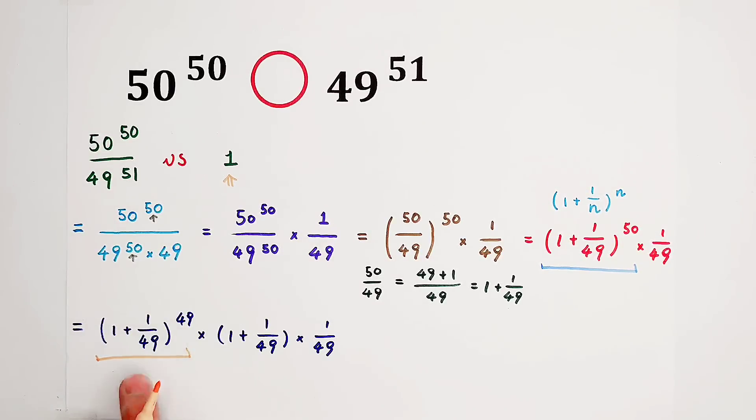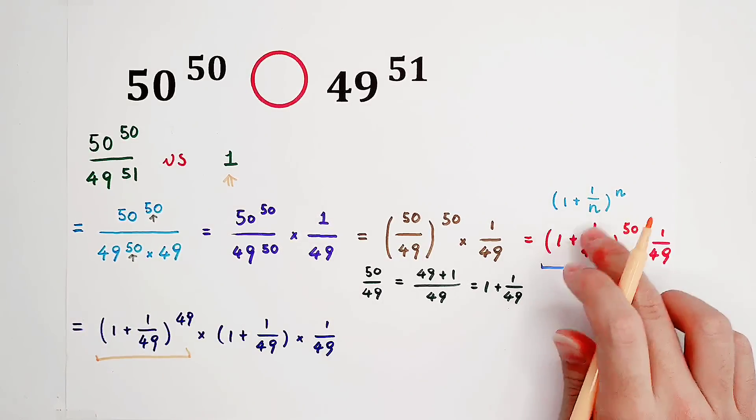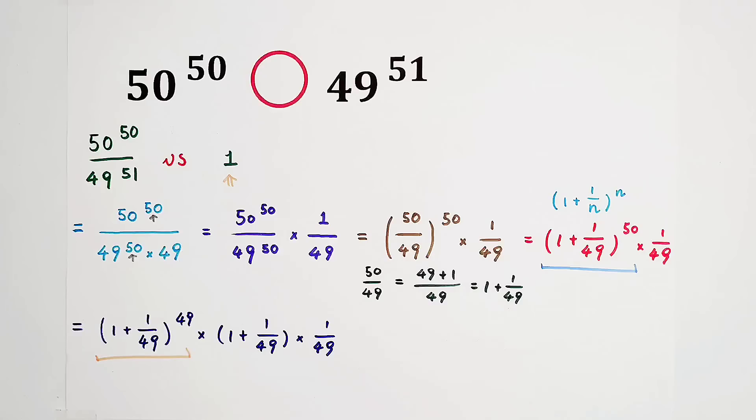Now the problem is this guy: 1 plus 1 over 49, all to the power of 49. It has the form 1 plus 1 over n, all to the power of n. So then, I don't know if you've heard of Euler's number e. If not, learn it now.